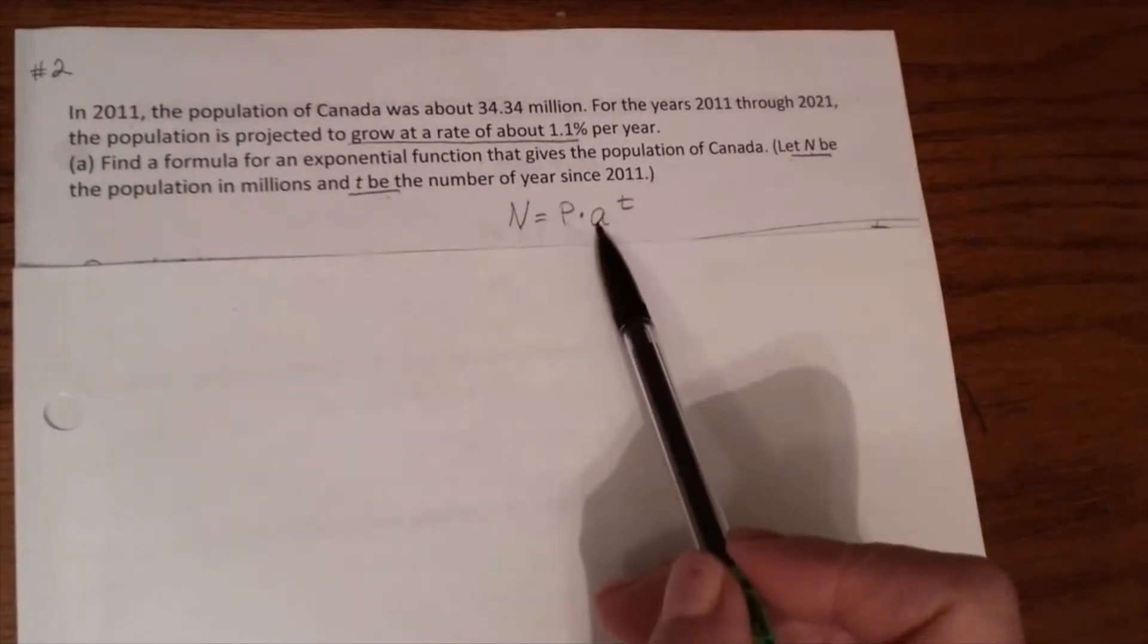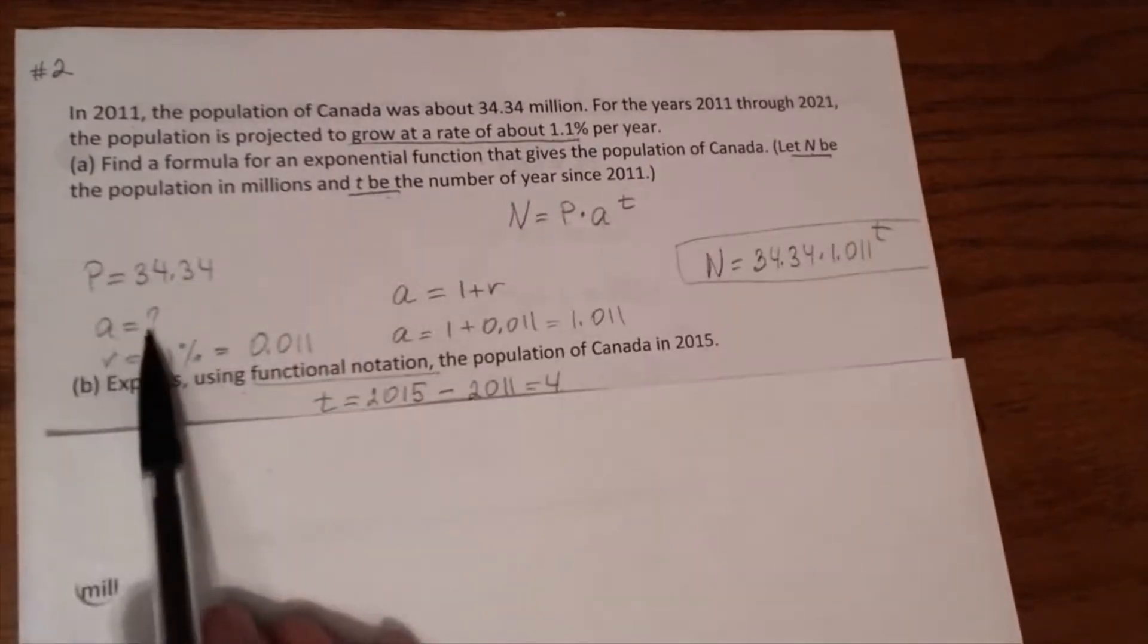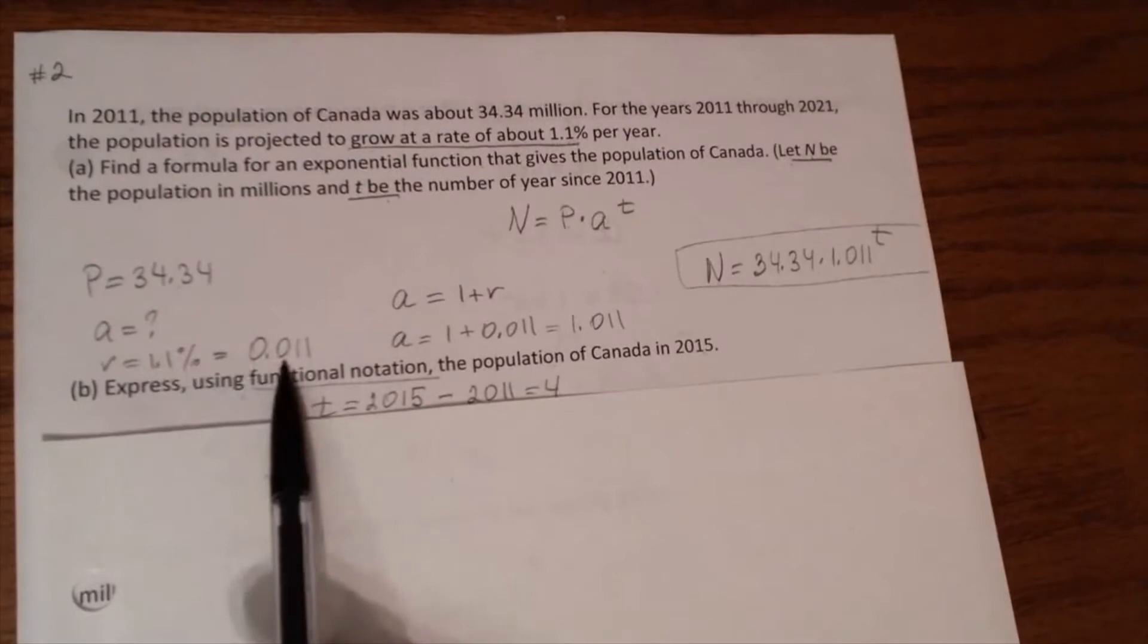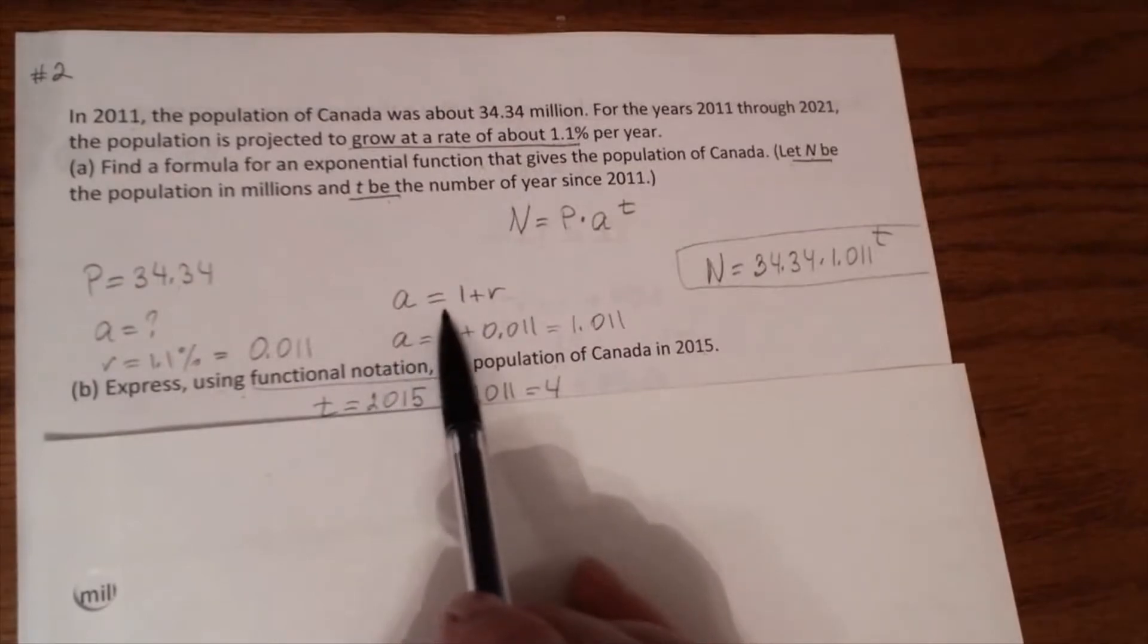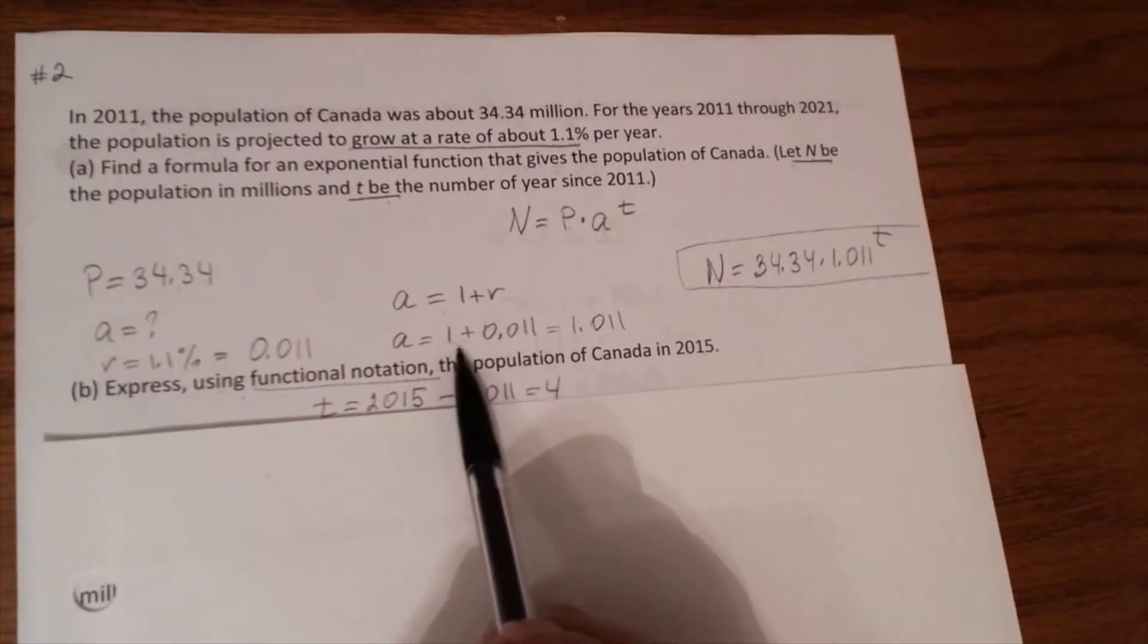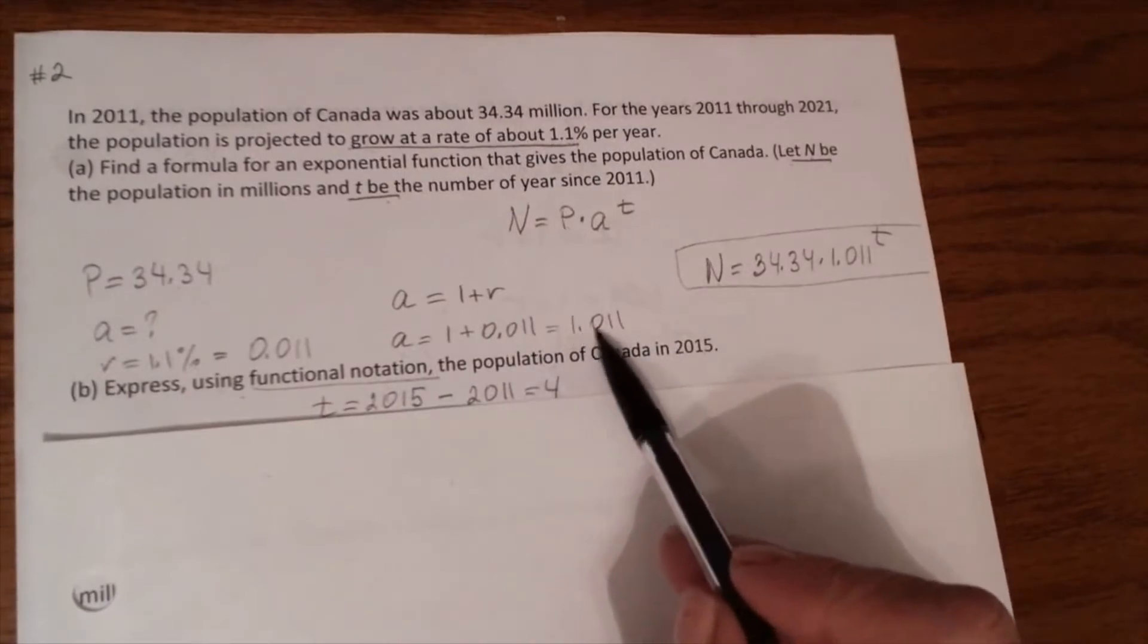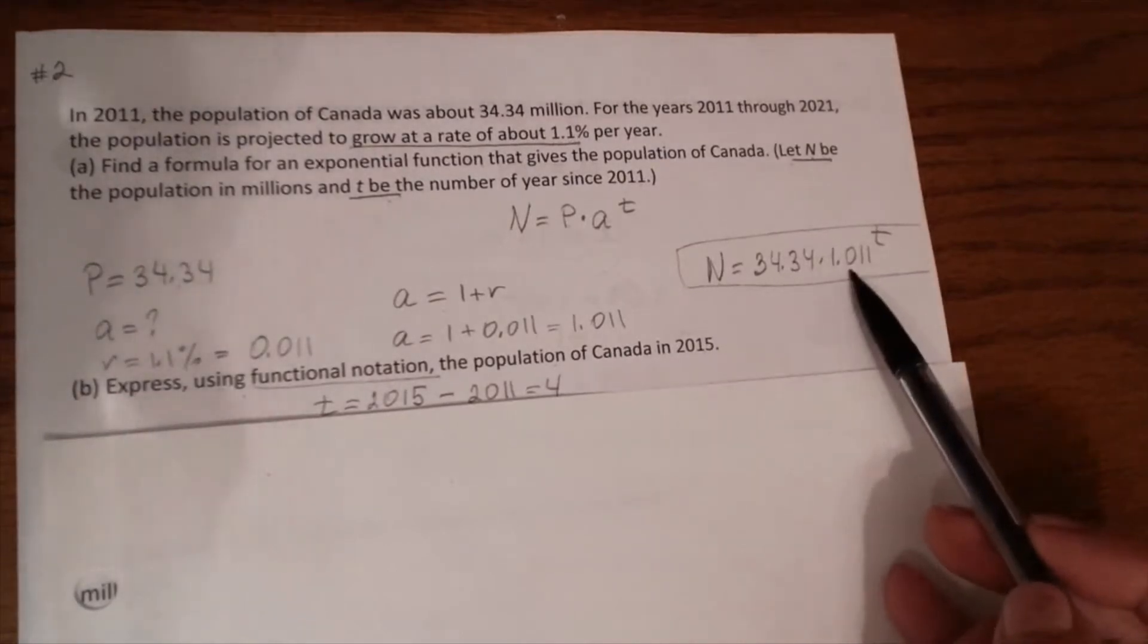A is the factor. Do we know the factor in this problem? No. We need to find the factor, but we know that the rate equals 1.1%. Don't forget to change percent into decimal. Because the factor is growth, we will use the formula a equals 1 plus R. We will substitute 0.011 into the formula and we will calculate the factor. The factor is 1.011. Now we will substitute the initial value and the factor into the formula.